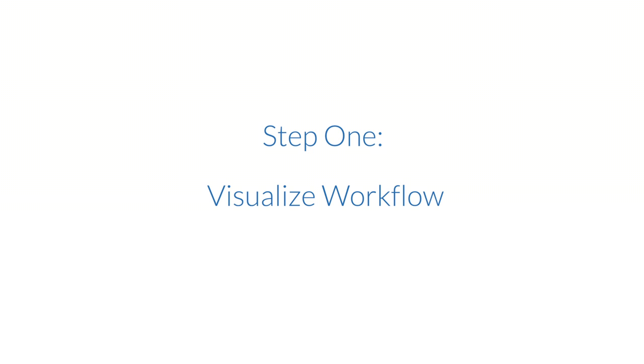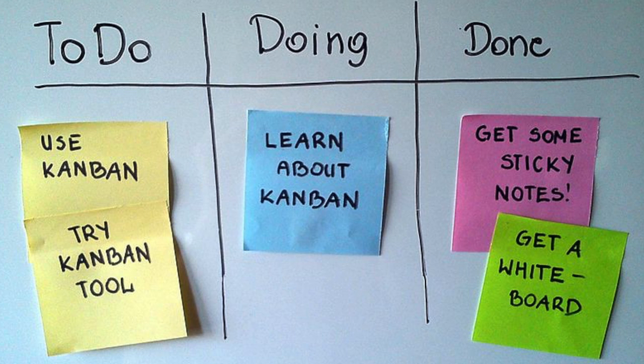Step 1: Visualize workflow. To be effective, your team needs to visualize the workflow. To do this, break down the process into distinctive steps and track the flow of work going through on a Kanban board. Kanban boards are information radiators, communicating the status of work to the entire team, thus fostering communication and team collaboration.